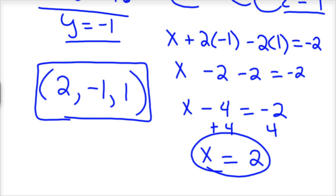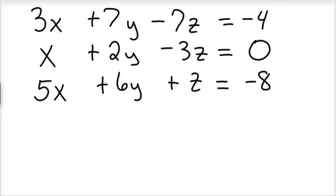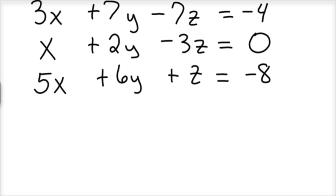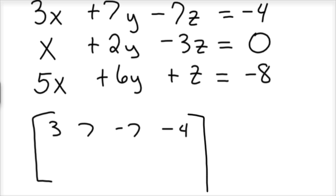I'll do one more example and let you try it on your own. Go ahead and try it — hit stop and see what you can do with this problem, then see if your answer matches mine. So the first step is to make a matrix: 3, 7, negative 7, negative 4; 1, 2, negative 3, 0; and 5, 6, 1, negative 8.